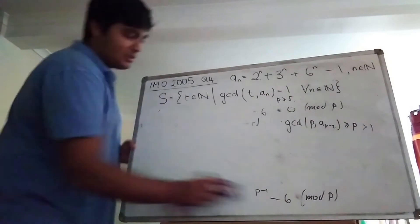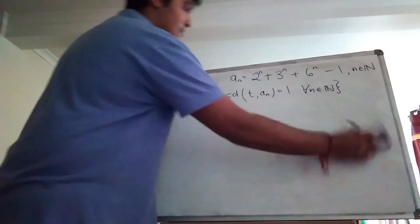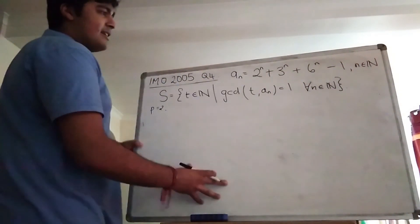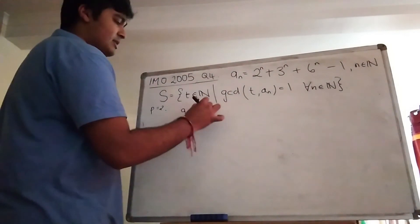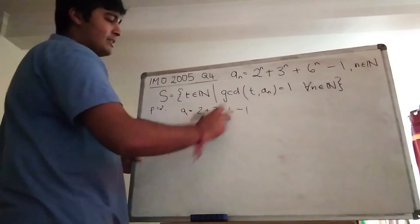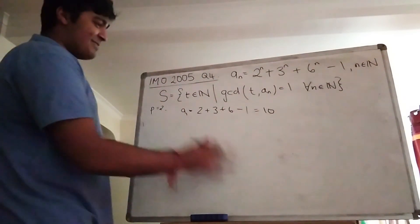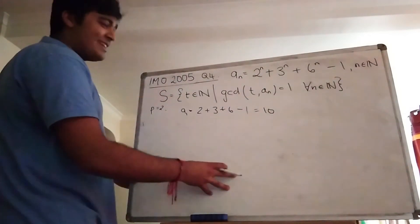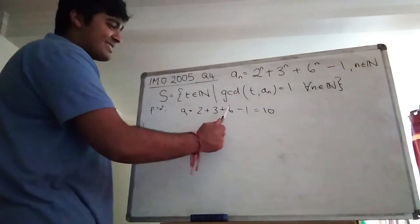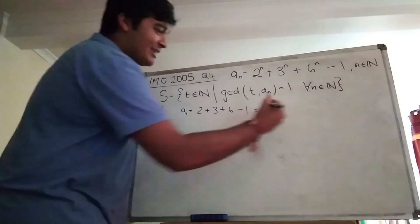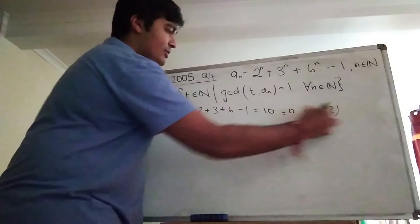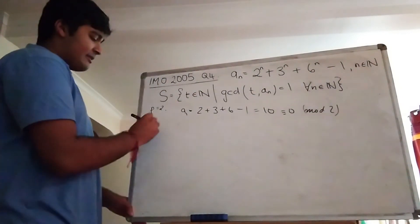Let's do the special cases. For p equals two, let's look at the case n equals one — the first term in this sequence. So a₁ equals 2 to the one plus 3 to the one plus 6 to the one minus one, which is two plus three is five, plus six is eleven, minus one is ten. And clearly ten is a multiple of two — it's congruent to zero mod two — so two is not in S.